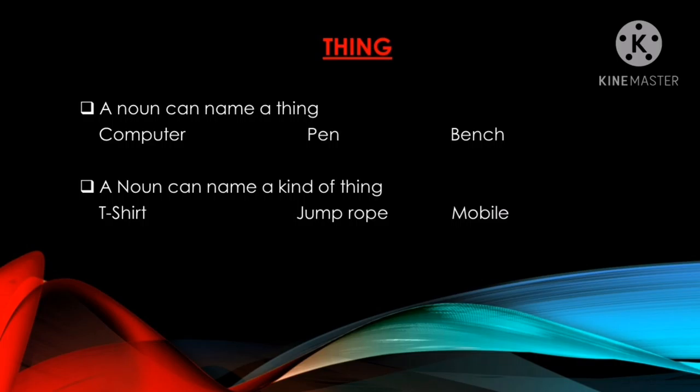A noun can name a thing. For example, computer, pen, bench. A noun can also name a kind of thing. For example, T-shirt, jump rope and mobile.